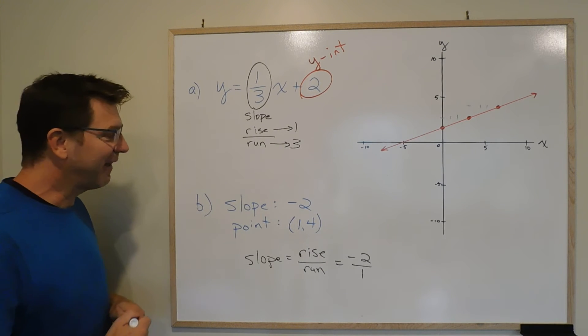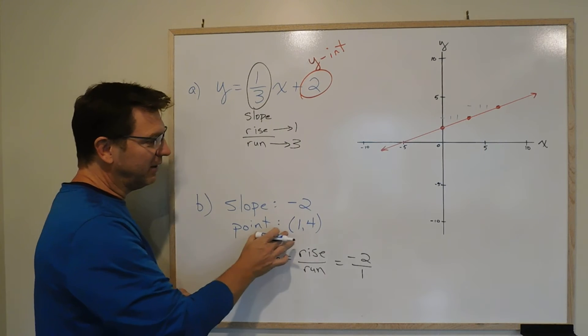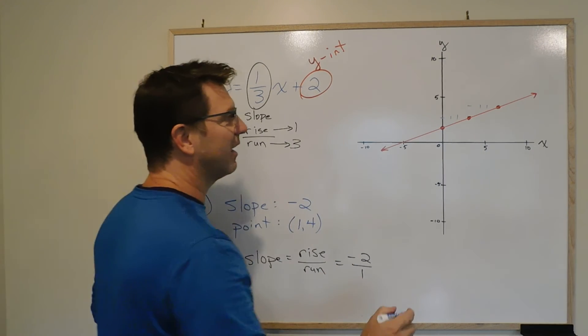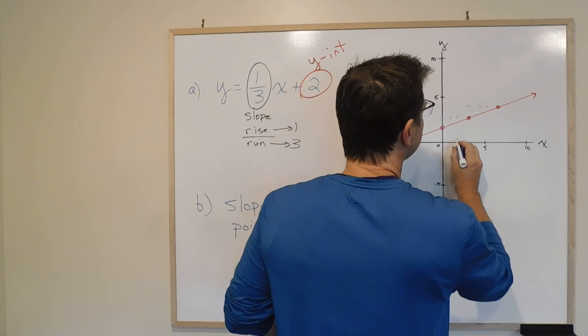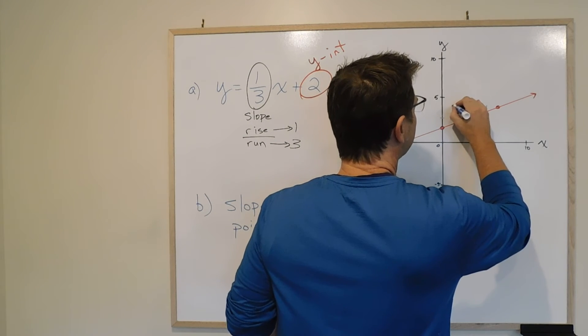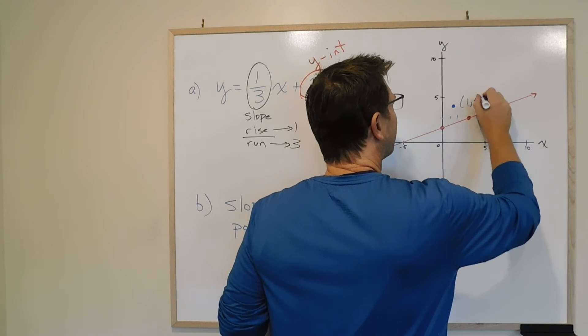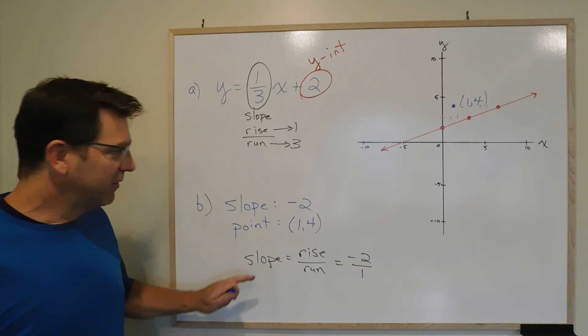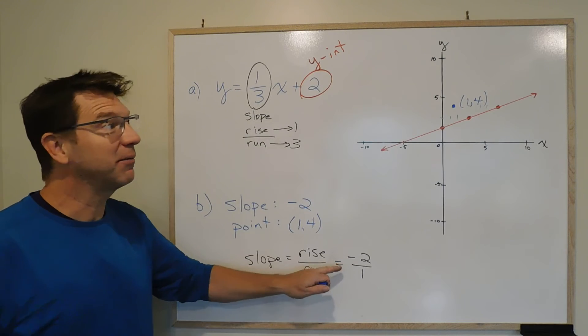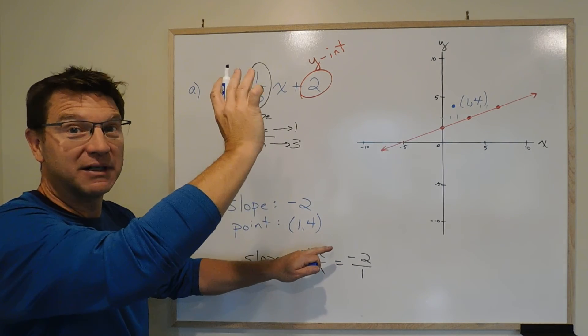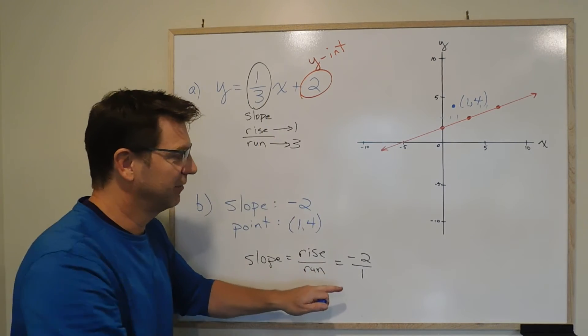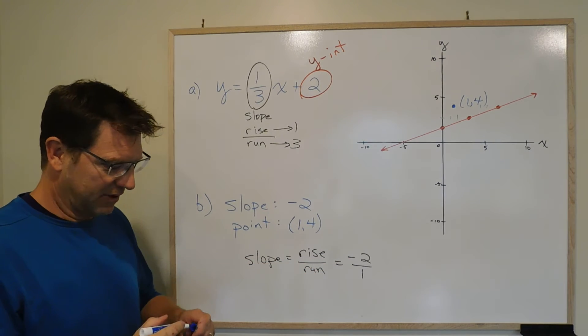Once we've done that, the point is 1, 4. So we literally just plot it. 1, 4. It's about right there. 1, 4. So this is 1, 4. Now we know the rise is negative 2. That means we're not actually rising because it's negative. We're actually going down. Negative 2 and 1.